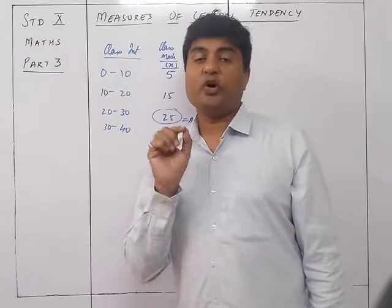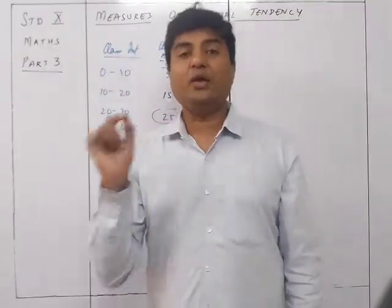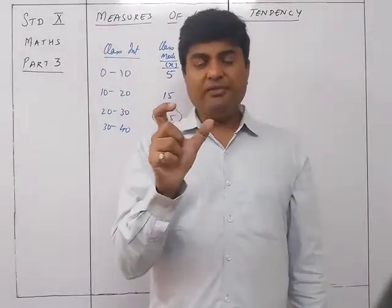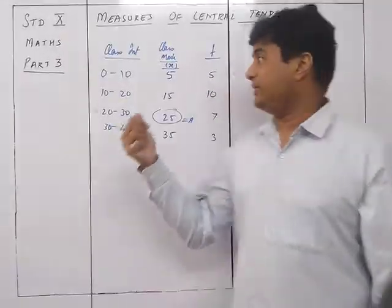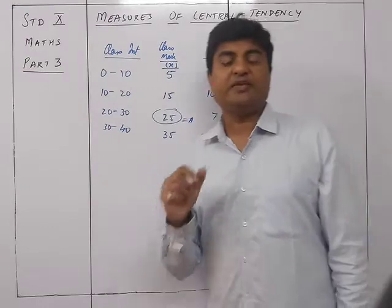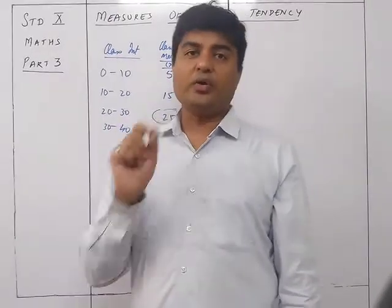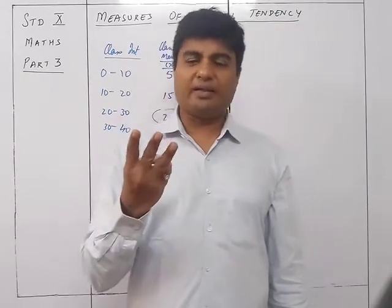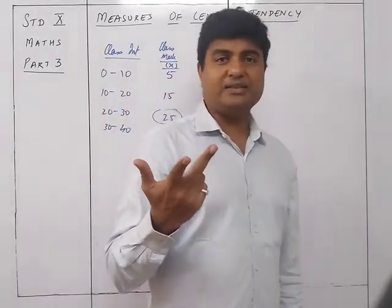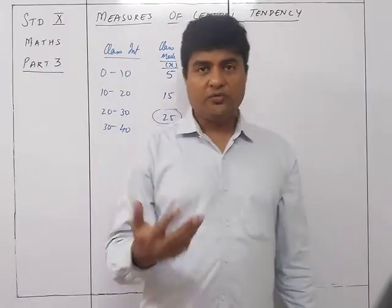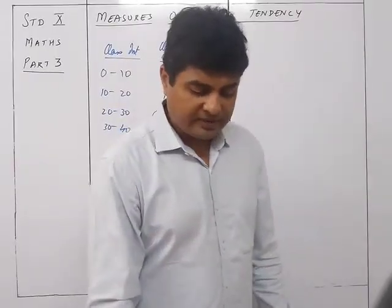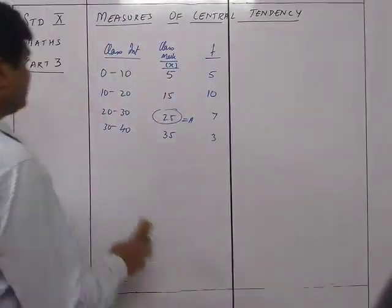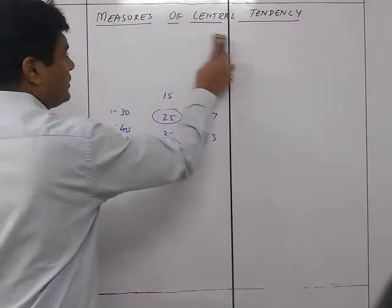In grouped data, x is the class mark, and then you find the assumed mean A accordingly. Only the class mark calculation is extra — otherwise the same three methods apply: direct method, shortcut method, and step deviation method.